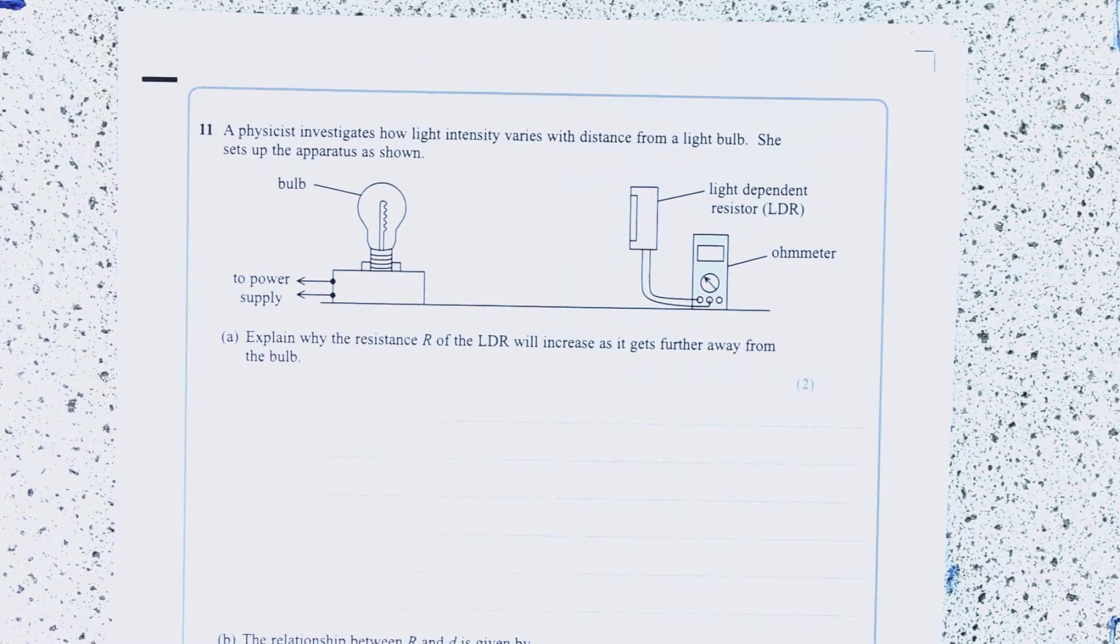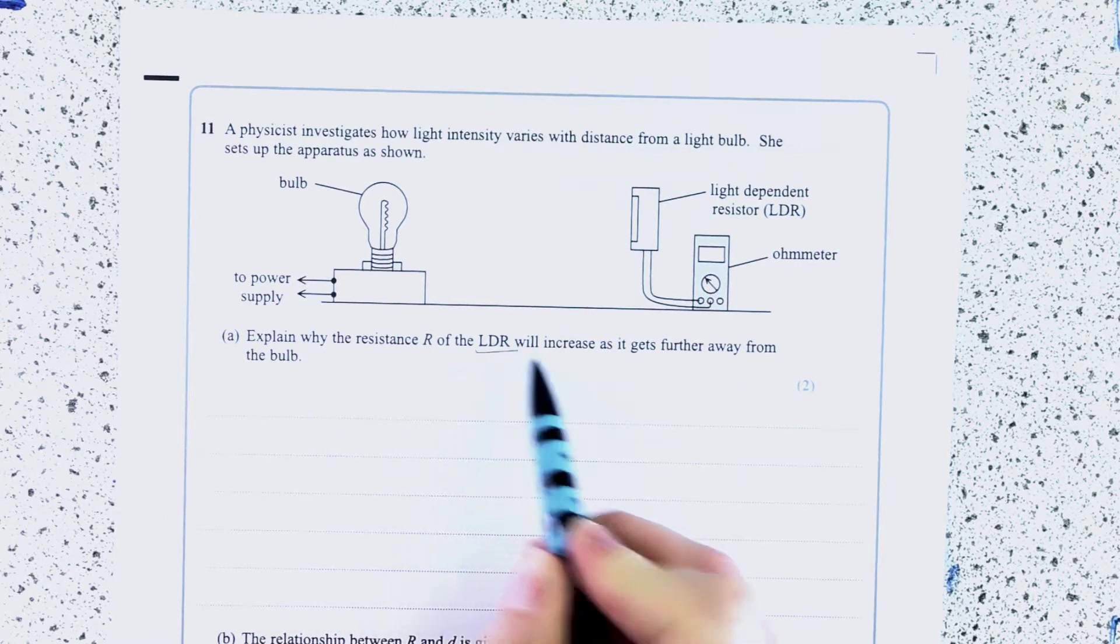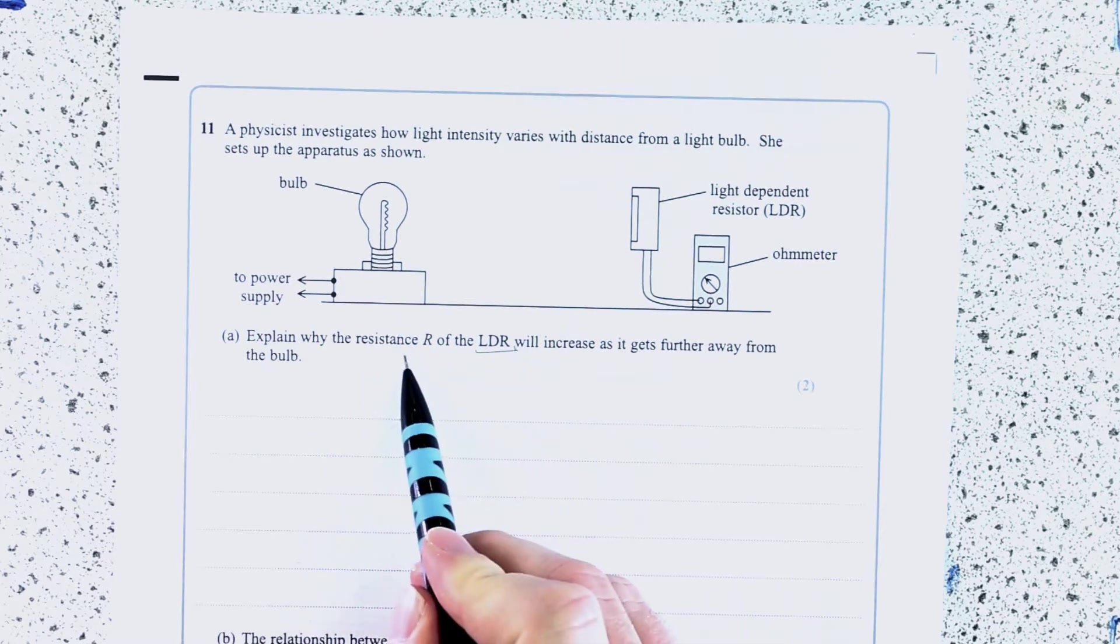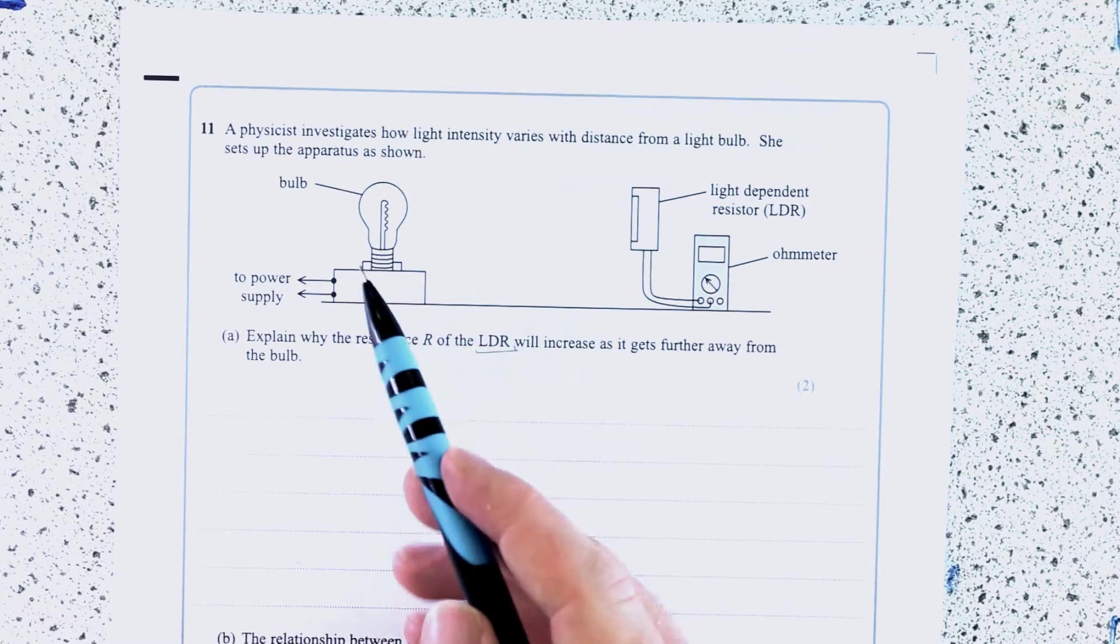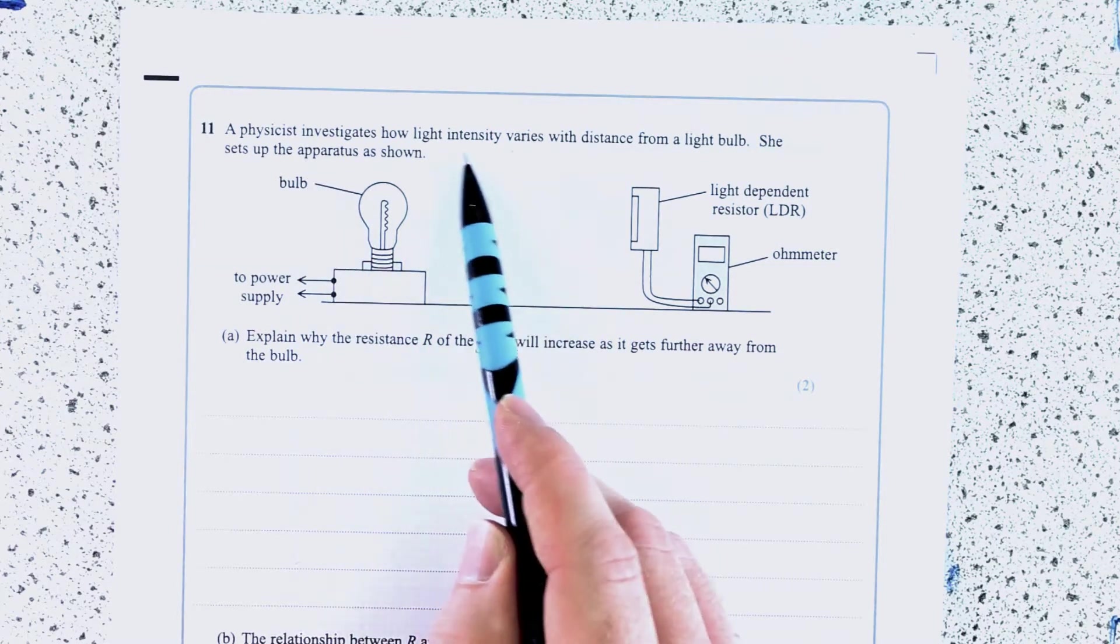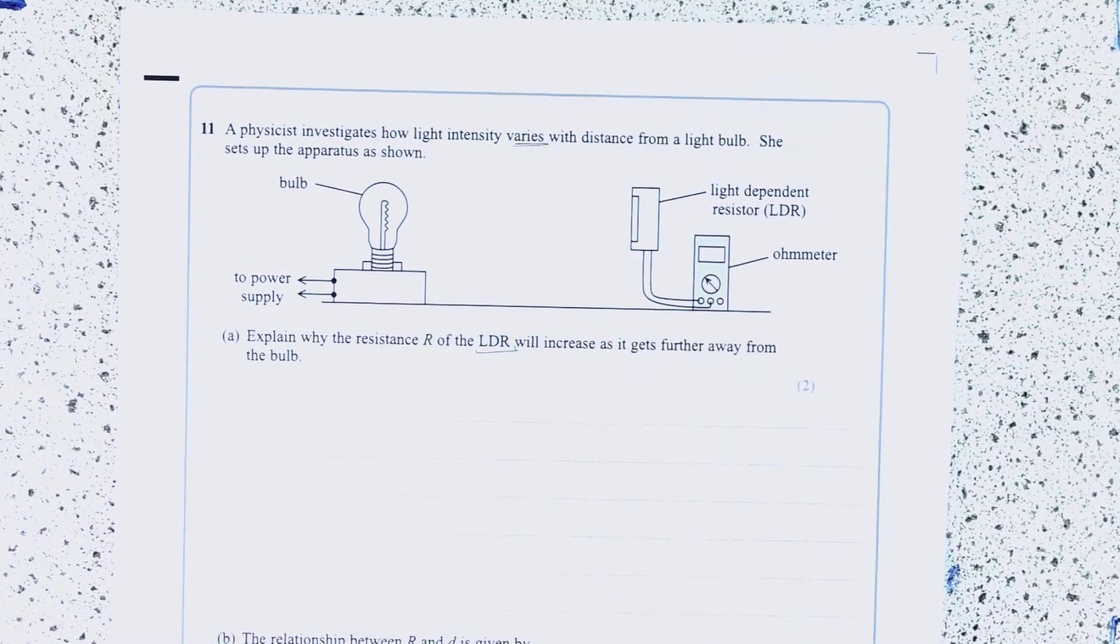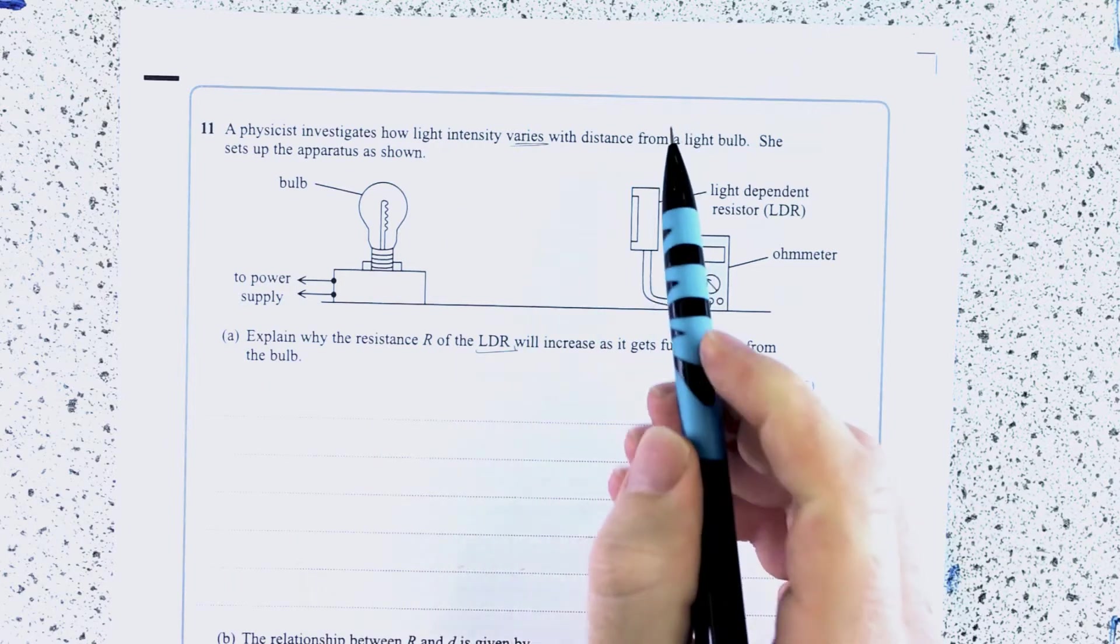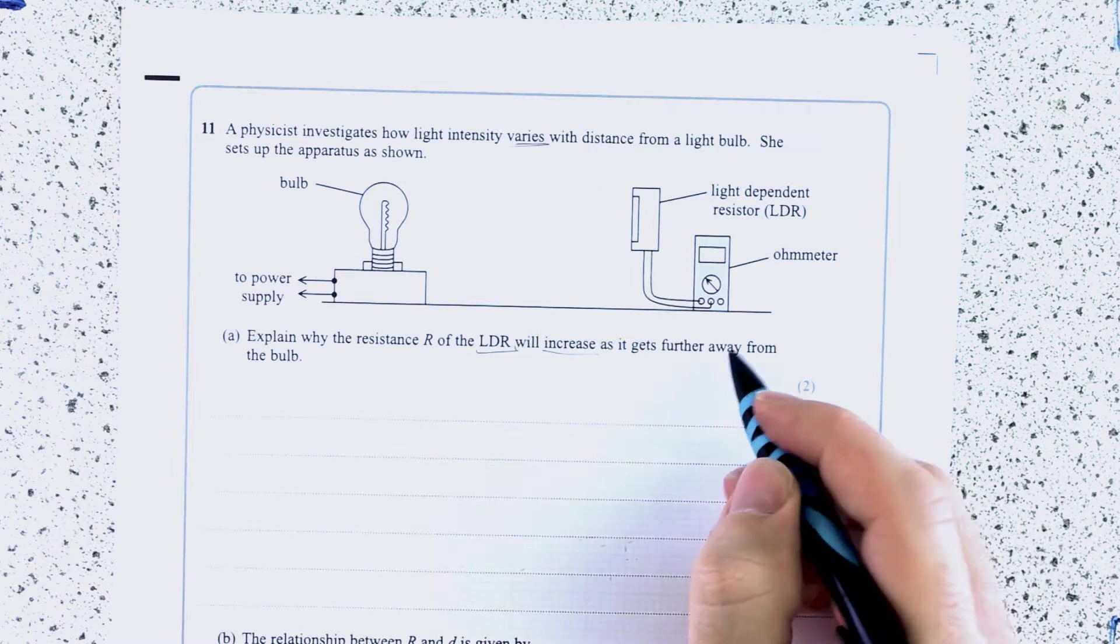So this one really is quite a straightforward one. It's just actually a bit of a definition of what an LDR is, and link that to what you're seeing in this diagram here. Light intensity varies with distance from a light bulb. Notice it doesn't tell you which direction light intensity goes.